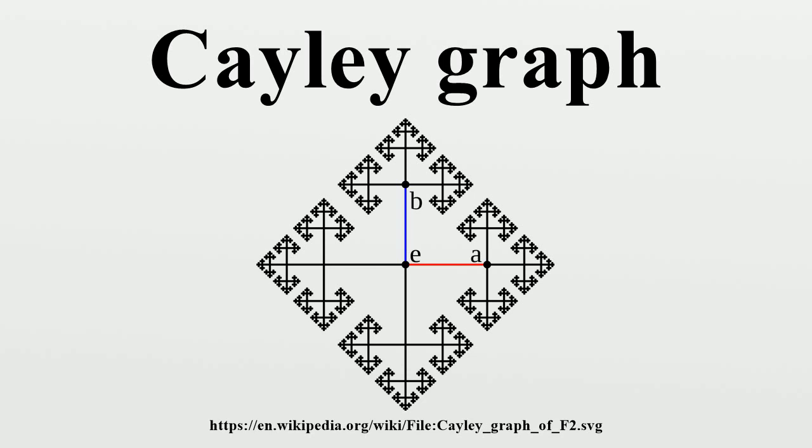A graph can be constructed even if the set does not generate the group. However, it is disconnected and is not considered to be a Cayley graph. In this case, each connected component of the graph represents a coset of the subgroup generated by.